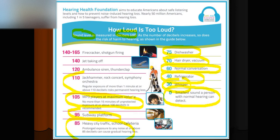110 dB includes jet engines, jackhammers, rock concerts, and symphonies. 120 dB includes ambulance sirens, fire truck sirens, and thunder claps. We can often see a driver of a fire truck wearing hearing protection instruments, because if they don't, they will experience significant hearing loss after working for some time, or even become deaf.